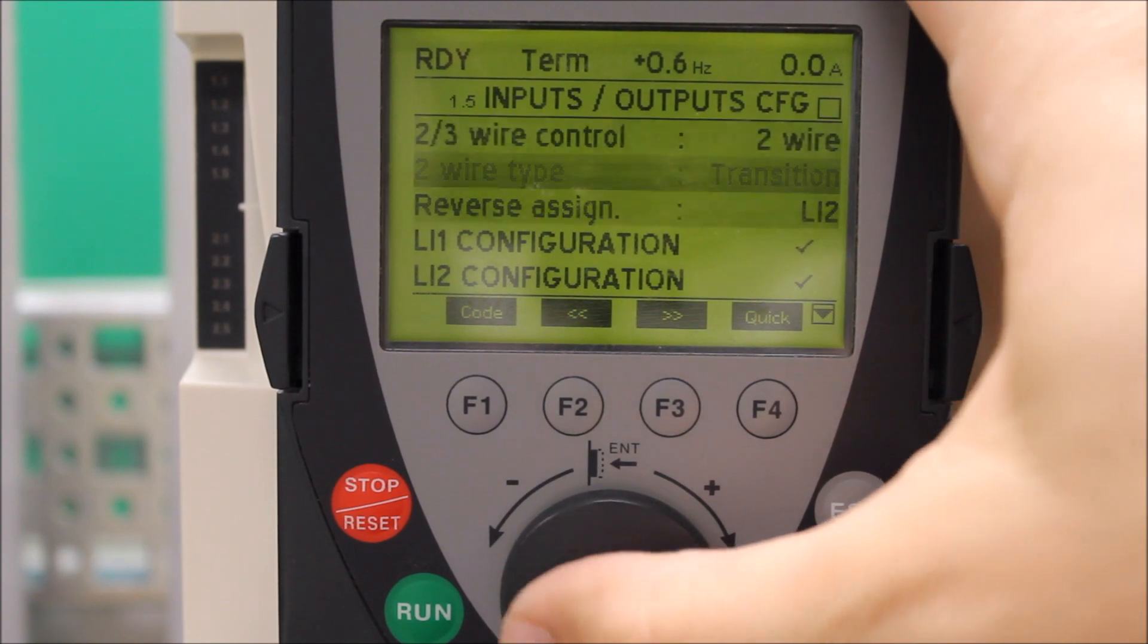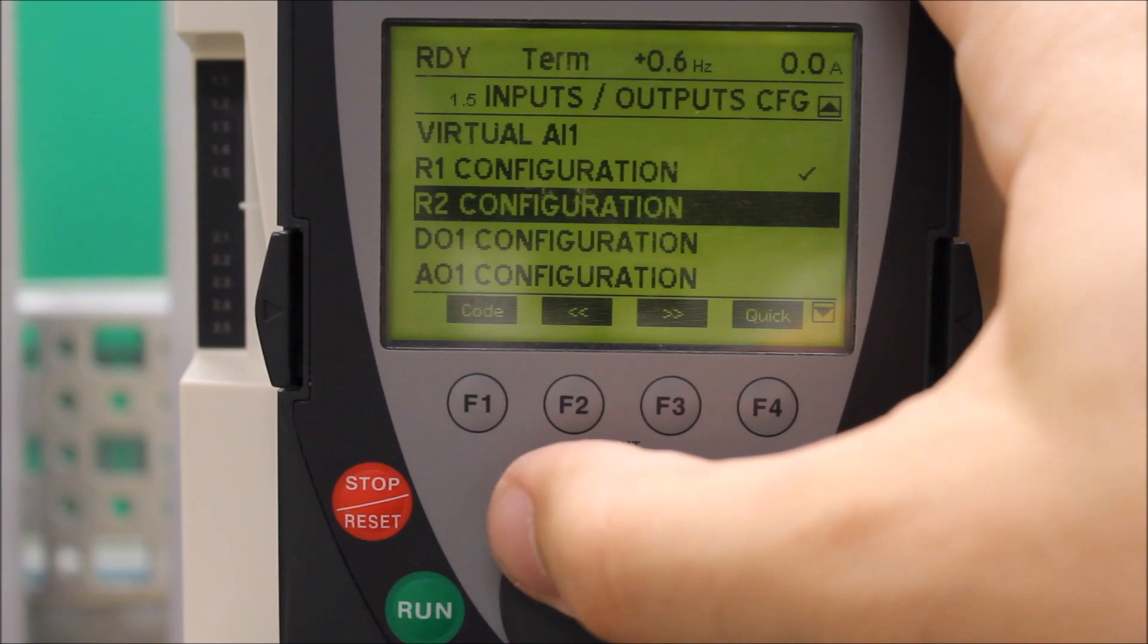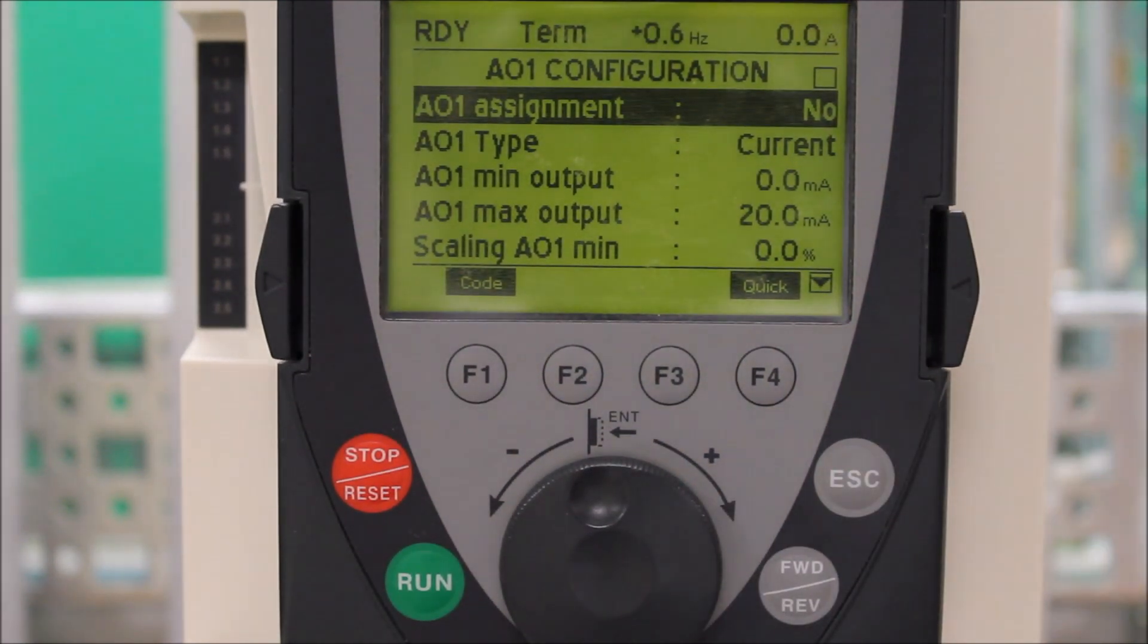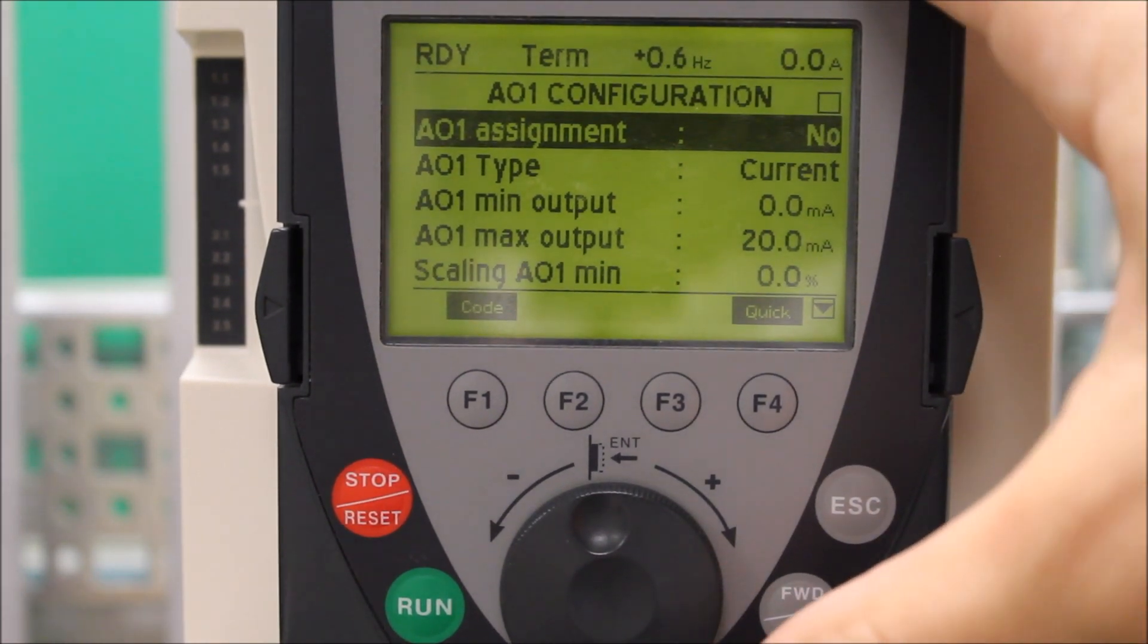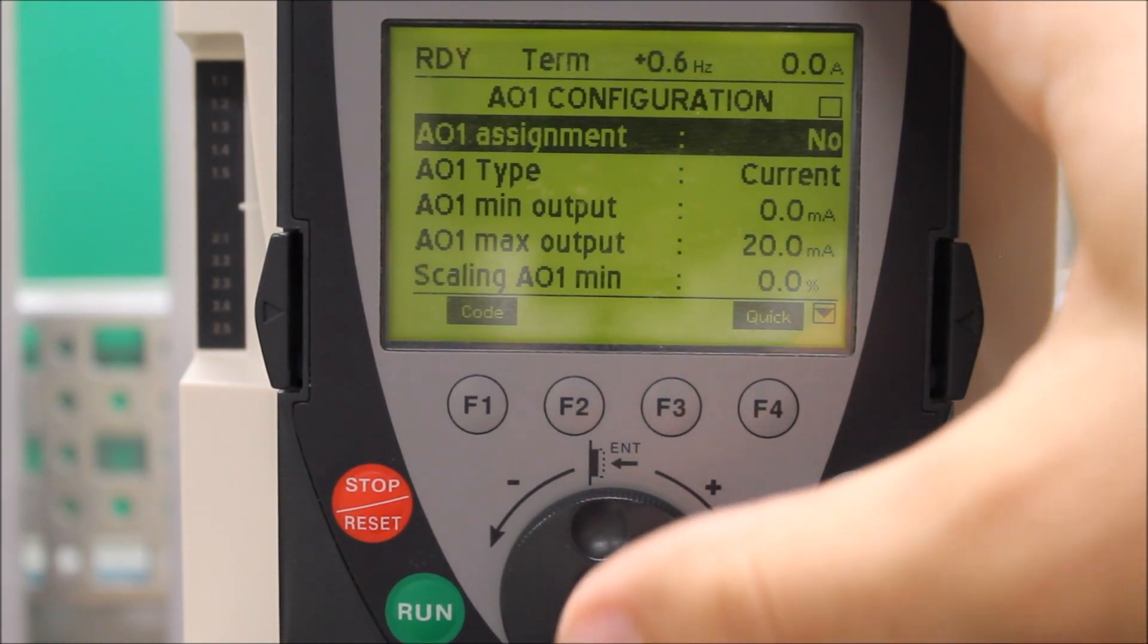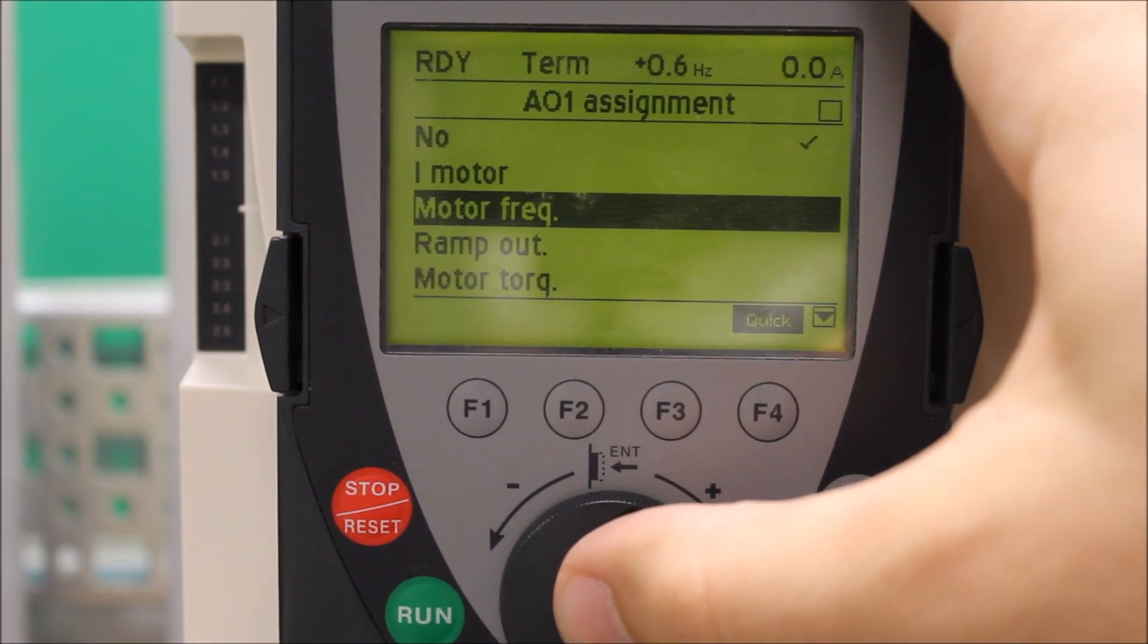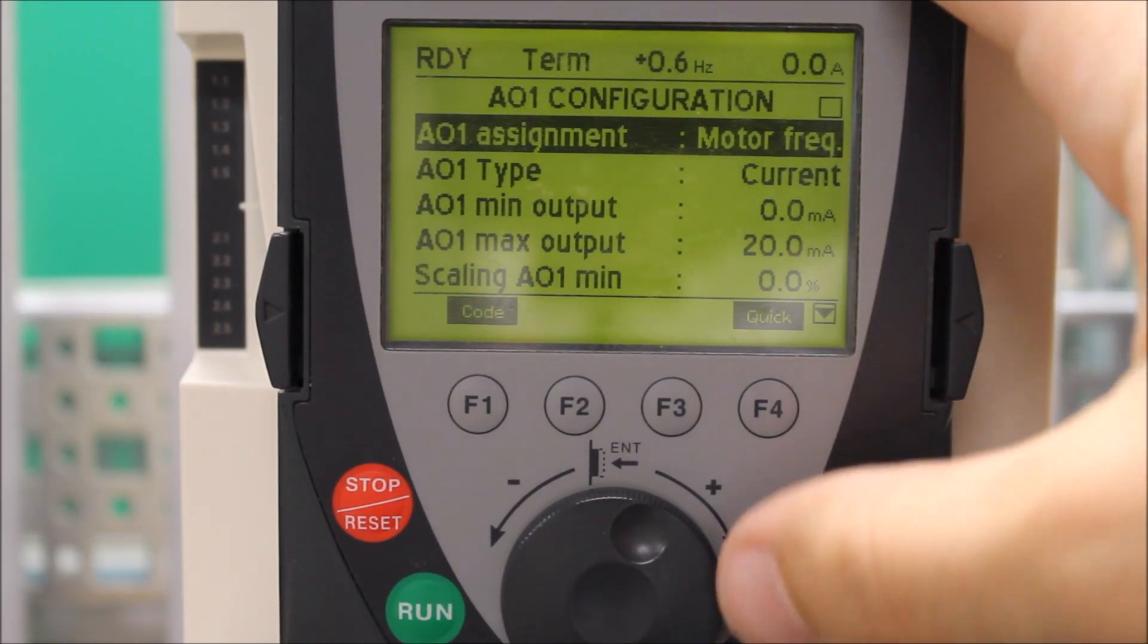In here, scroll down to AO1 configuration. Enter on that, which is your dial. Right now, analog output 1 is unassigned. To change that, enter on it, and you can find motor frequency. Enter. Now the assignment is motor frequency.